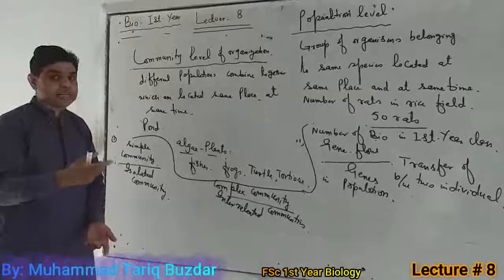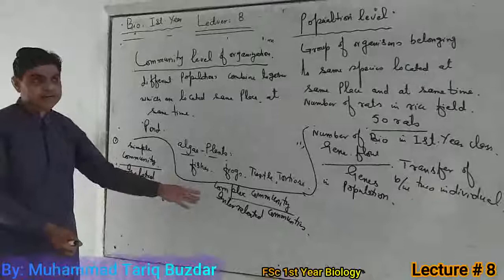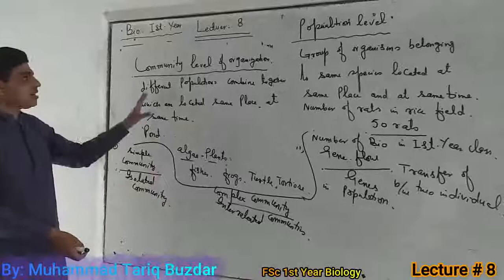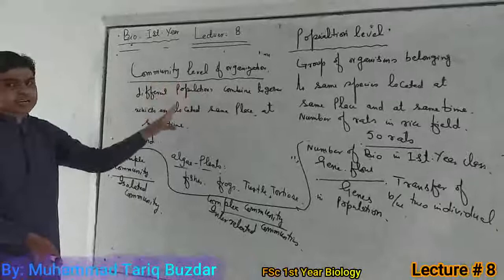What is the difference between simple and complex communities? This is the last question. Discuss the biological organization at the population and community level of organization. This is our lecture. Thank you.